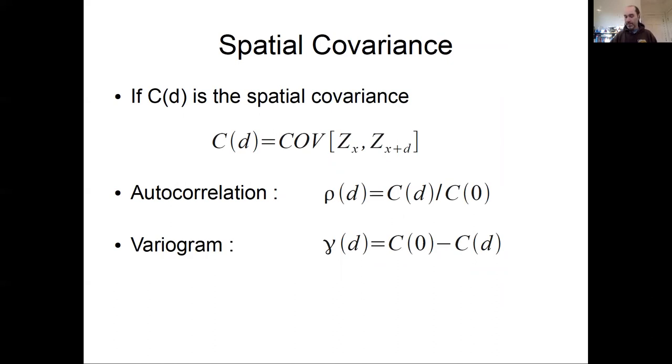The last point about spatial autocorrelation is that there's an important relationship between spatial covariance and the two diagnostics we looked at. If we define spatial covariance as C(d), the covariance at some distance between points x and points x plus d some distance away, then the autocorrelation ρ at some distance is just that covariance normalized by the covariance at lag zero, which is the same definition of a correlation coefficient in all contexts, even non-spatial. We're normalizing it by the variance.